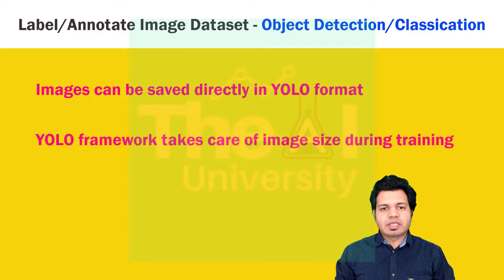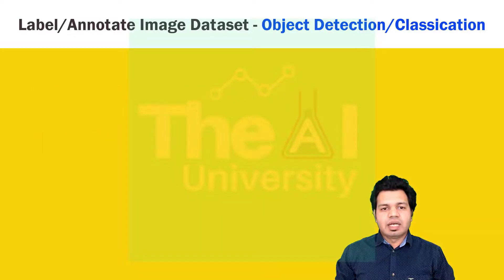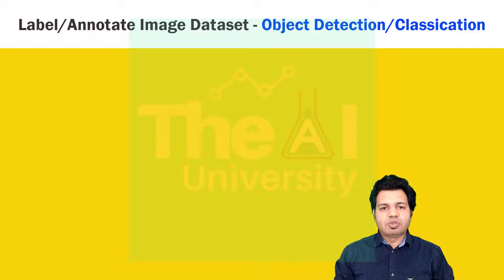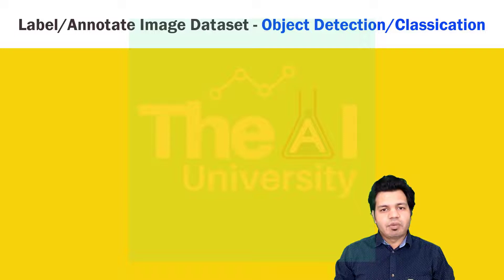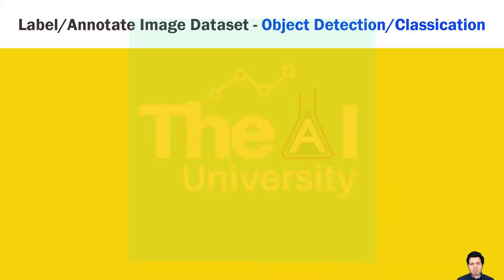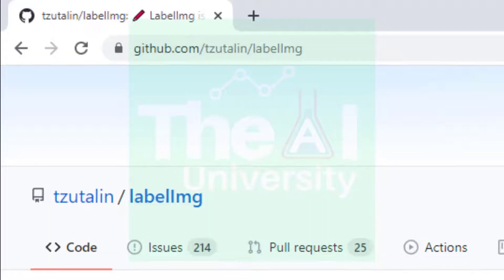Now let's see how to install the labelImg tool. I am using a Windows computer with the Anaconda distribution of Python, so I'm going to show you the steps with respect to that. If you have macOS or Ubuntu installed on your system, you can drop a message in the comment box and I'll be glad to share the steps for those as well.